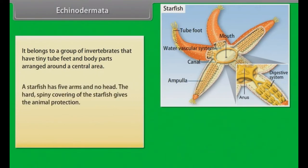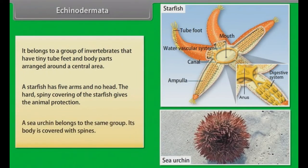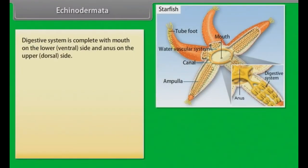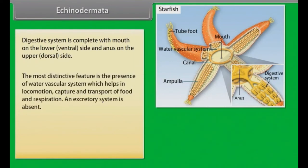A starfish has five arms and no head. The hard spiny covering of the starfish gives the animal protection. A sea urchin belongs to the same group and its body is covered with spines. The digestive system is complete with mouth on the lower ventral side and anus on the upper dorsal side. The most distinctive feature is the presence of a water vascular system, which helps in locomotion, capture and transport of food, and respiration.